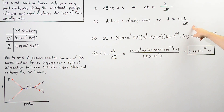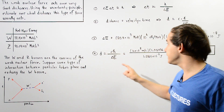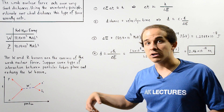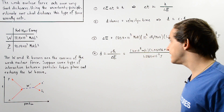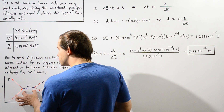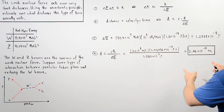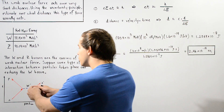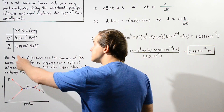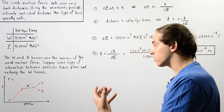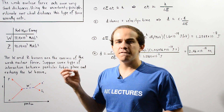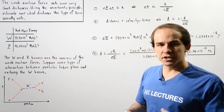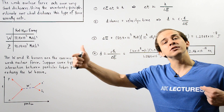Plugging into our distance equation — c times ℏ divided by ΔE — gives us the distance over which this gauge boson travels, which is also the distance over which the weak nuclear force acts. The result is 2.46 × 10⁻¹⁸ meters, which is a very, very tiny distance — much smaller than the range of, say, gravity, which can act over very large distances.